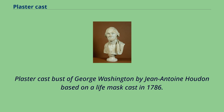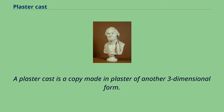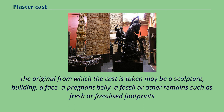Plaster cast bust of George Washington by Jean Antoine Houghton, based on a life mask cast in 1786. A plaster cast is a copy made in plaster of another three-dimensional form. The original from which the cast is taken may be a sculpture, building, a face, a pregnant belly, a fossil, or other remains such as fresh or fossilized footprints.